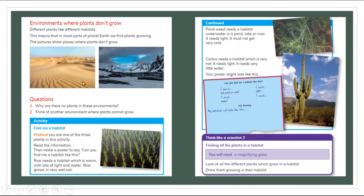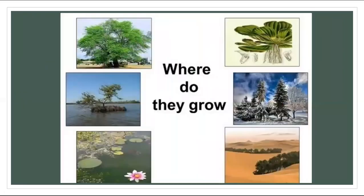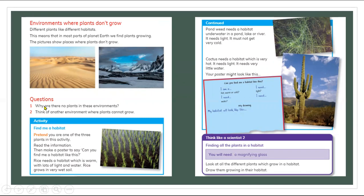Today we learned about different habitats. In these two pictures plants cannot grow. The first question is: why are there no plants in these environments? Because the desert is very hot, and the icy place is very cold for the plants, so they cannot grow.